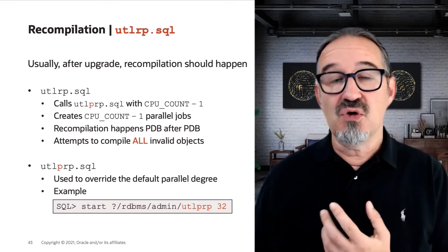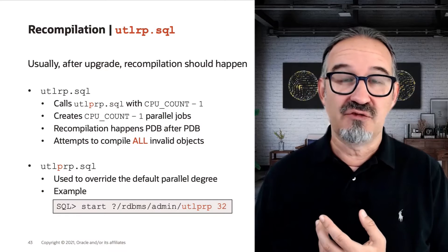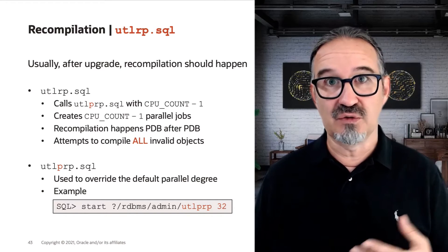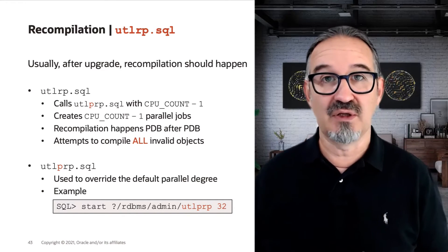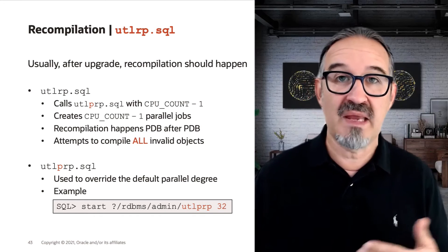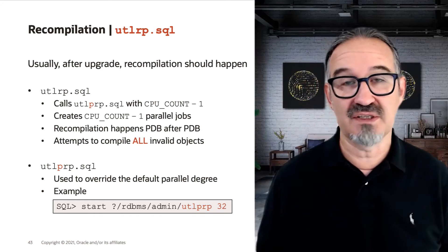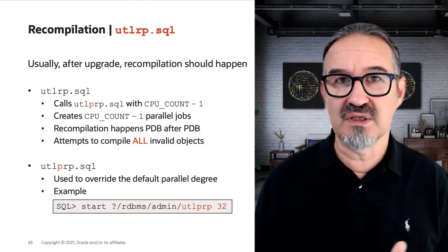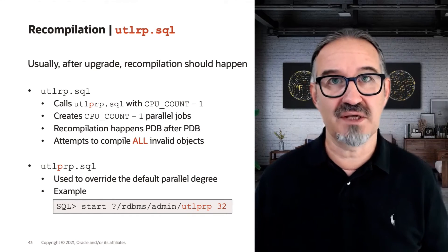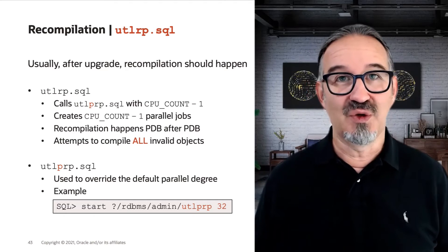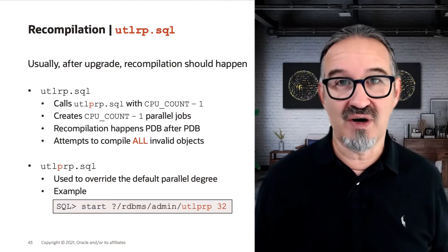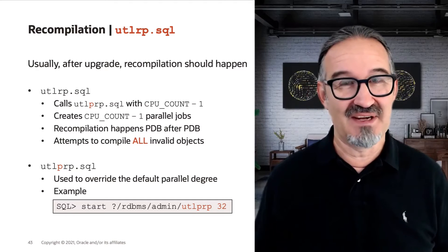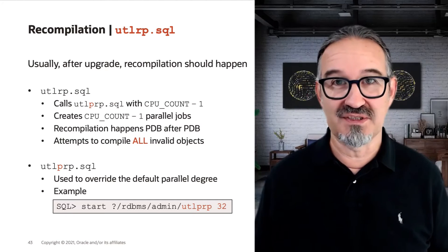You could have the idea of calling UTL-PRP by yourself, and you will find an example on the blog. There may be situations — in the past, we had something with virtual CPUs on sandboxes where you got so many recompile jobs it blew up your system.